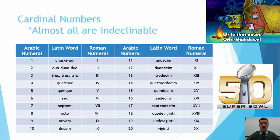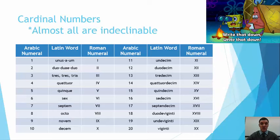So you see your Latin words here. Unus, una, unum. That one declines. It looks like an adjective. Duo, duae, duo. It declines. Tres, tres, tria. It declines. Then you start getting into the indeclinable numbers, starting at the number four. So quatuor is four. Quinque is five. Sex is six. Septem is seven. Octo is eight. Novem is nine. Decem is ten.